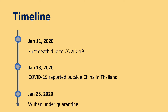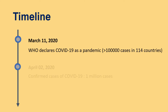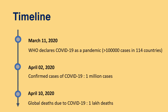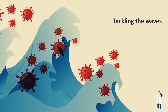On January 23, the people of Wuhan were quarantined. Coronavirus started spreading worldwide and WHO declared COVID-19 a pandemic on March 11, 2020. By April 2, 2020, there were more than a million confirmed cases of COVID-19 and global deaths exceeded 100,000. Since then, COVID has affected almost all countries and no region has remained unaffected. The entire world is trying its best to tackle the waves of coronavirus and mitigate deaths from SARS-CoV-2 infection.